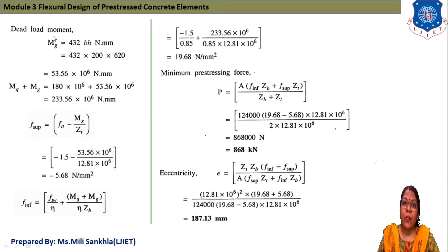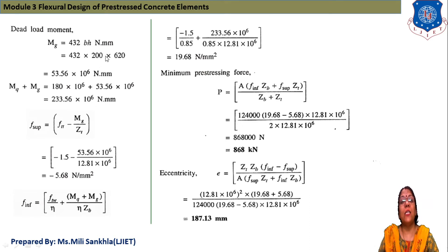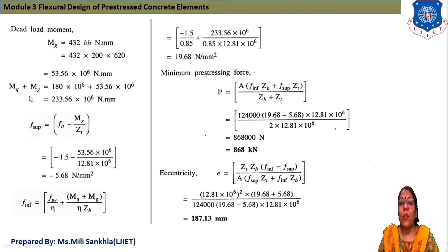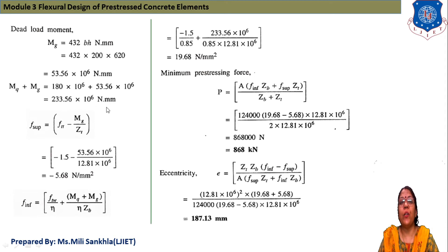Substituting B = 200 mm and H = 620 mm into the dead load moment expression, M_G = 432 × 200 × 620 = 53.56 × 10⁶ N·mm. The total moment is M_Q + M_G = 180 × 10⁶ + 53.56 × 10⁶ = 233.56 × 10⁶ N·mm.